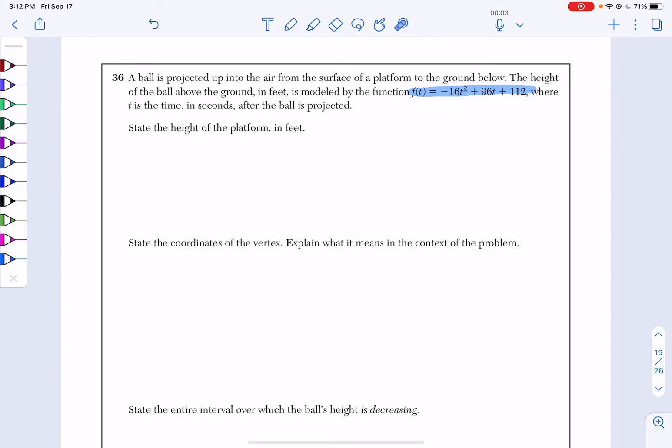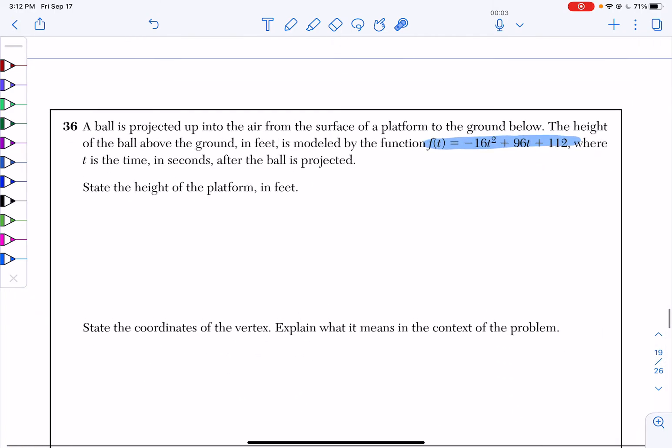Question A says, state the height of the platform in feet. So, in a way, the ball is being projected from in the air from a surface of a platform to the ground below. So, I'm starting at the surface, I'm starting in the air. The thing is, no time has happened. So, that basically means I'm going to plug in t=0. So, I know this part right here happens when t equals zero. So, everywhere I see a t, I'm going to plug in zero.